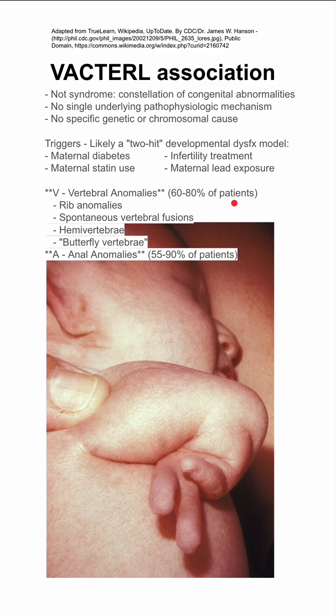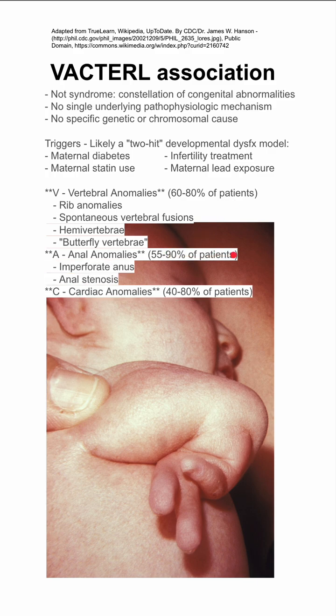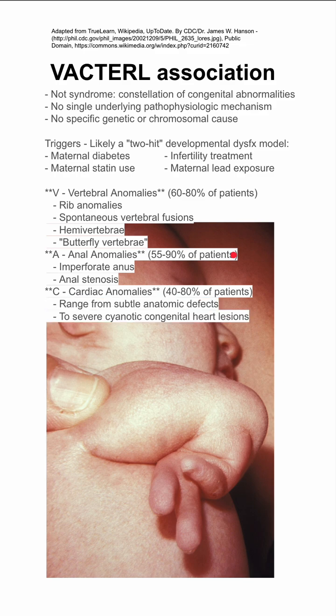A is for anal anomalies, present in 55% to 90% of patients, including imperforate anus and anal stenosis. C is for cardiac problems, occurring in 40% to 80% of patients, ranging from subtle anatomic defects to severe cyanotic congenital heart lesions.